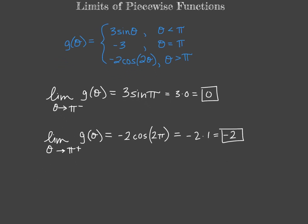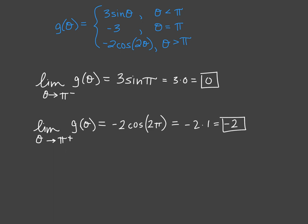Now because our left side and right side, those limits do not match up, we would say that the overall limit as theta approaches pi of our function g of theta does not exist since the two one-sided limits are not equal.